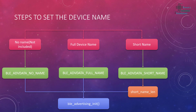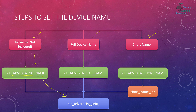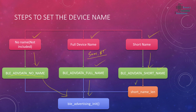We have three main configurations. The first is no name — if you don't set any name, the GAP device name characteristic will have 'BLE_ADV_NO_NAME'. The second is full device name — in my case I'm using 'sam bt' with the parameter 'ADV_DATA_FULL_NAME', then I initialize the advertisement. The third is short device name — we set that parameter and then define the short name length.